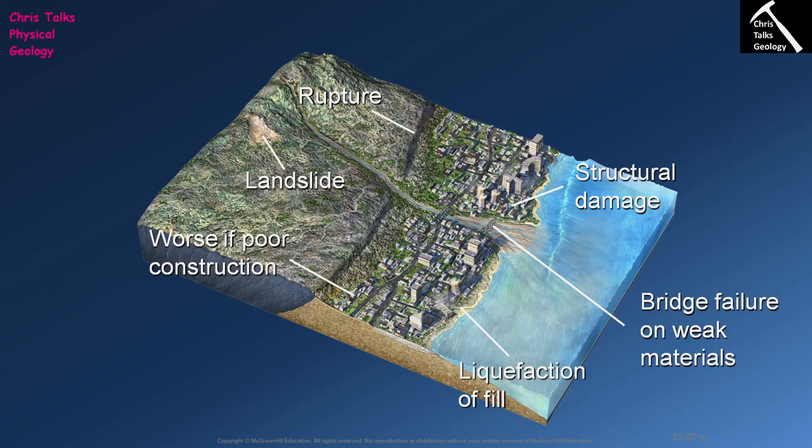Imagine you've built your building on this sediment thinking it's solid, and then an earthquake happens. The water injects itself in between the clasts and all of a sudden your solid sediment turns into a material that behaves like a liquid. Naturally your building is going to sink, or at the very least subside.